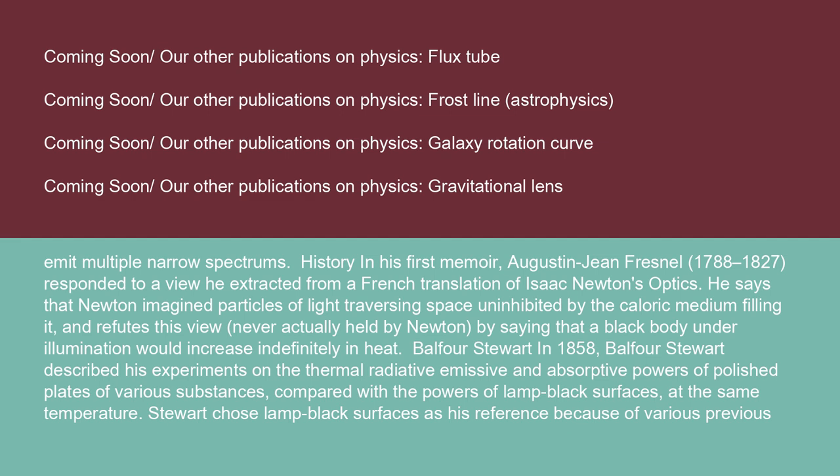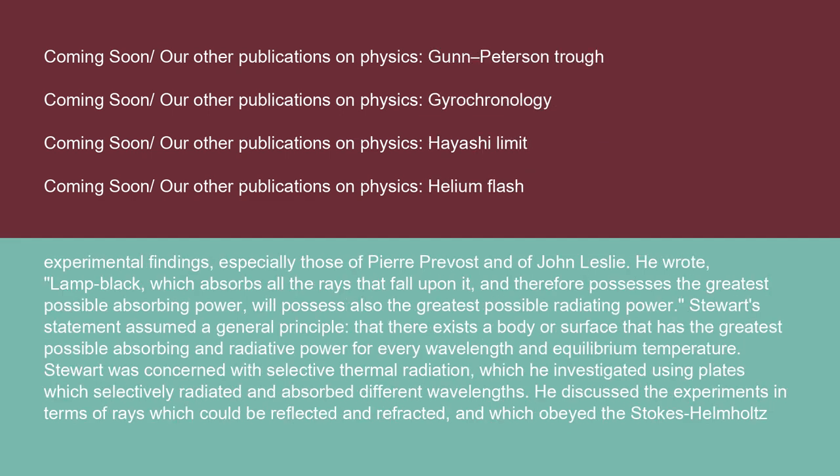Balfour Stuart in 1858 described his experiments on the thermal radiative emissive and absorptive powers of polished plates of various substances compared with the powers of lamp black surfaces at the same temperature. Stuart chose lamp black surfaces as his reference because of various previous experimental findings, especially those of Pierre Prévost and of John Leslie. He wrote: 'Lamp black, which absorbs all the rays that fall upon it, and therefore possesses the greatest possible absorbing power, will possess also the greatest possible radiating power.'